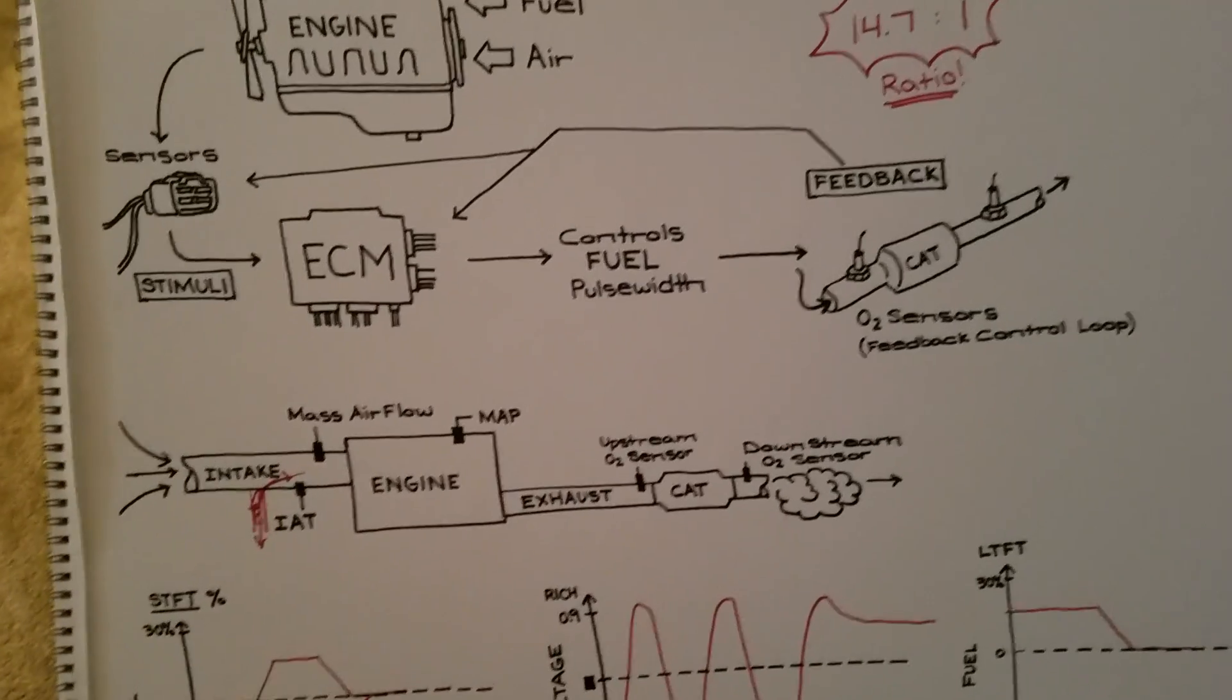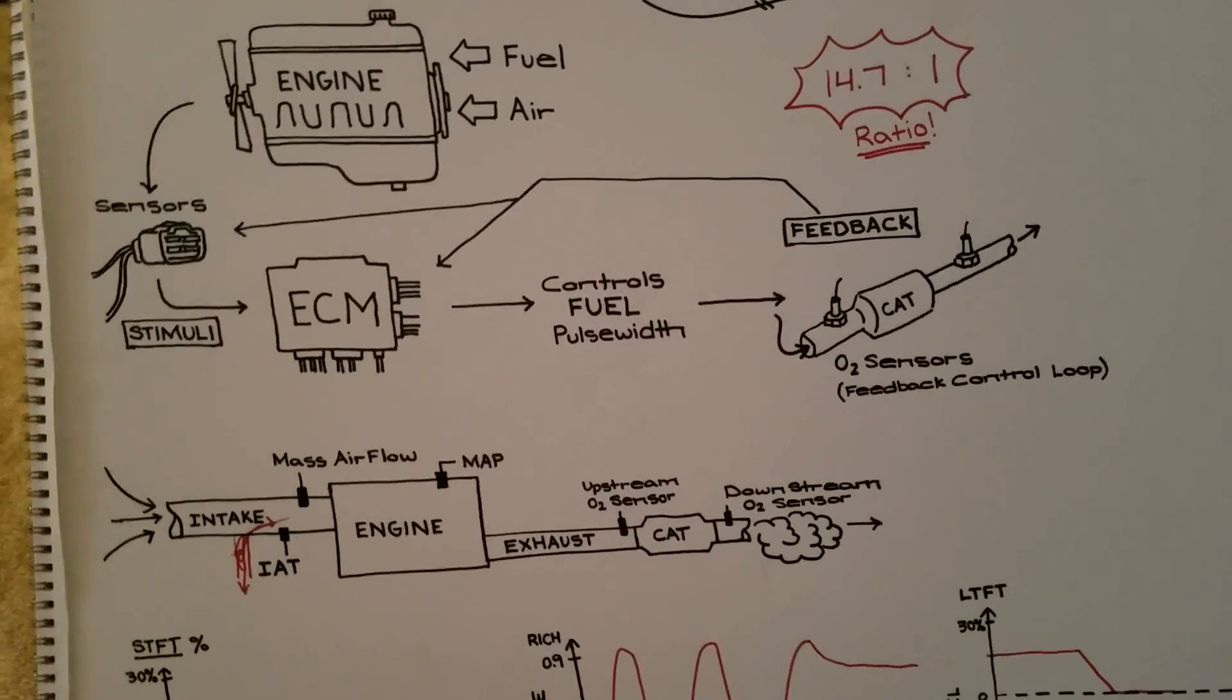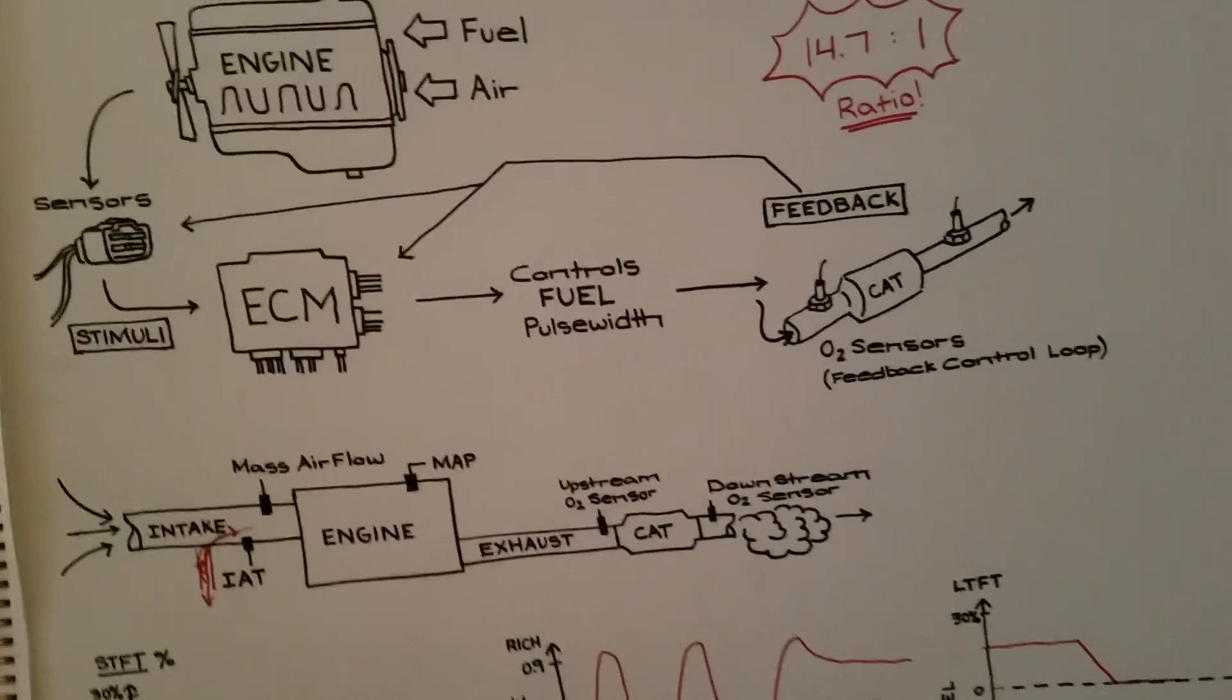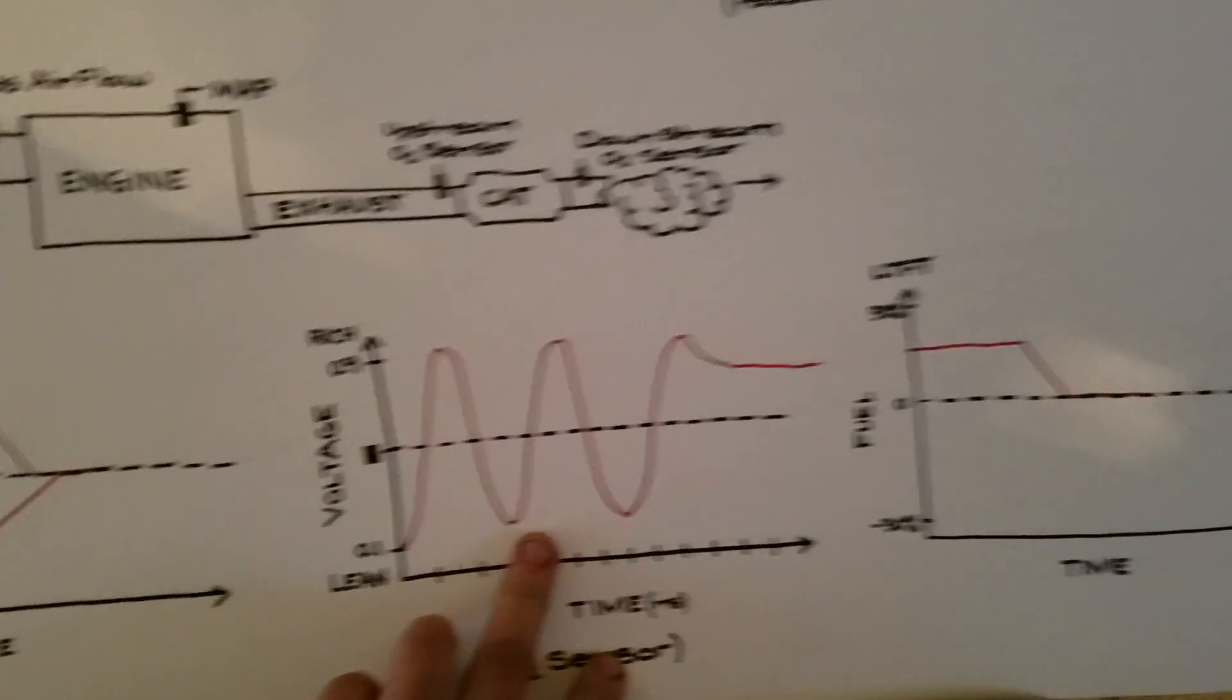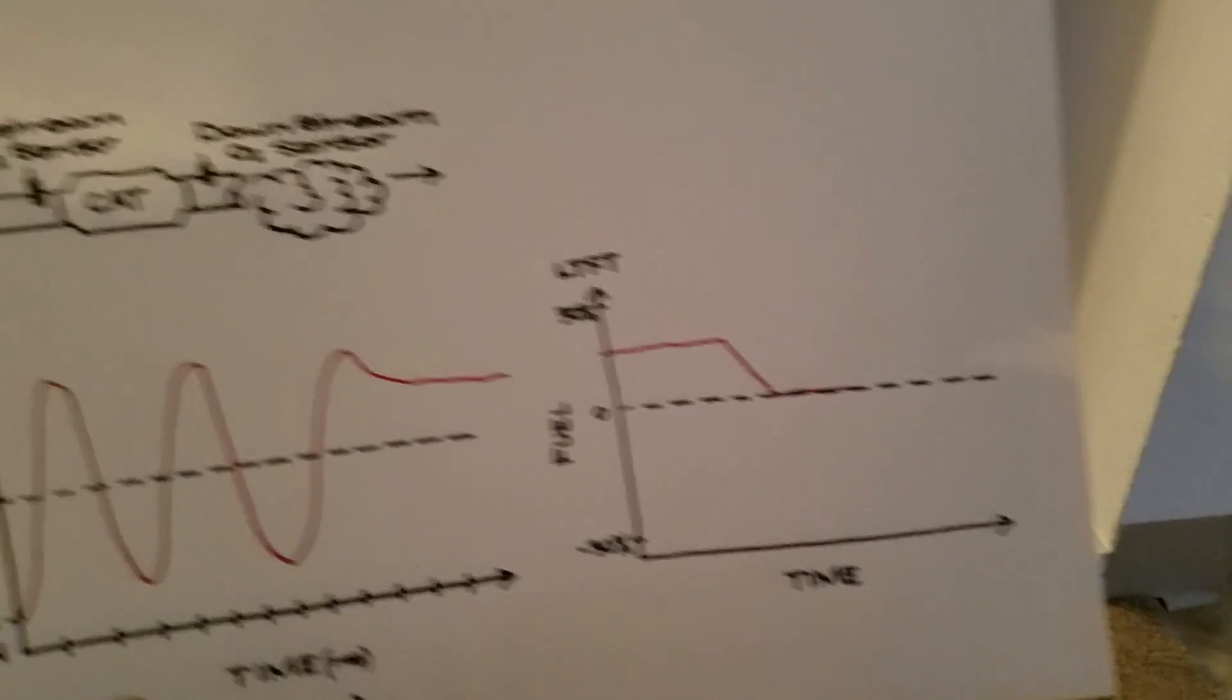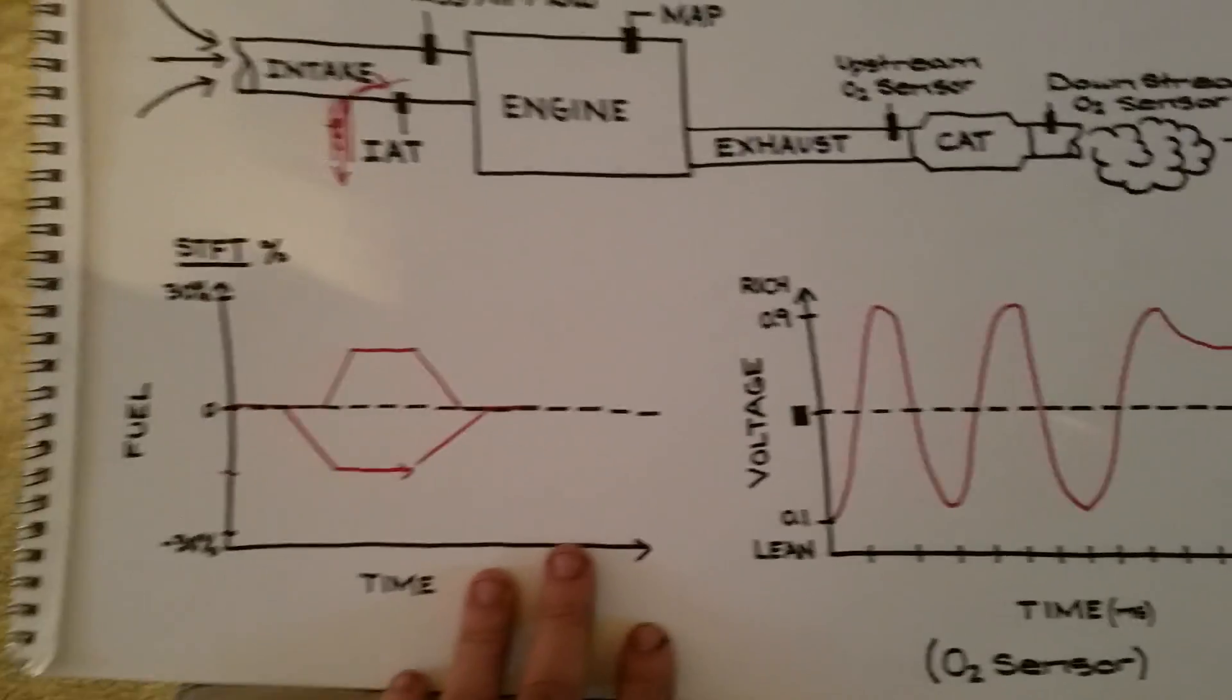So that's a real basic overview of the feedback control loop. Let's get into kind of the nitty-gritty of it. When I come down here, I drew three graphs. The first graph is short-term fuel trim. The second graph is for an O2 sensor and this is your long-term fuel trim. For now, just ignore the red lines.